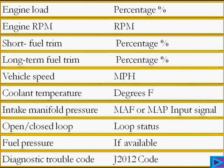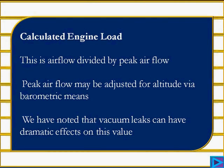Here we've blown it up so you can read it. Engine load is in percentile, RPM is in RPM, short and long-term fuel trims are in percentiles, vehicle speed in miles per hour, coolant temp in degrees Fahrenheit, intake manifold pressure is your MAF or MAP input signal, and open or closed loop status. The calculated engine load is air flow divided by peak air flow, and peak air flow may be adjusted for altitude via barometric pressure. We have noted that vacuum leaks can really have a dramatic effect on this value and can mask other problems. So if you're trying to use that calculated engine load PID and you have a vacuum leak, you're just wasting your time.